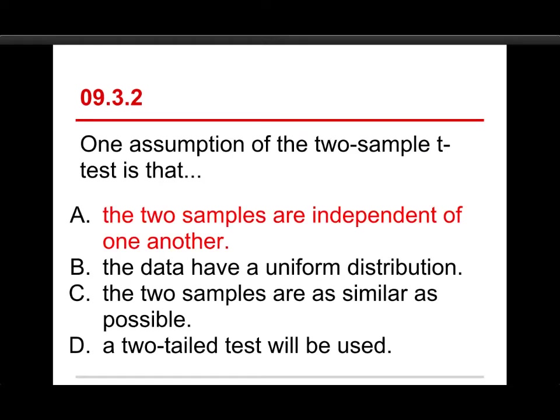The answer is that the two samples are independent of one another. Let me talk about the other ones. B is that the data have a uniform distribution. That's actually not an assumption of the t-test. We prefer to have normal distributions, more like bell curves, so uniform distribution is a different thing.